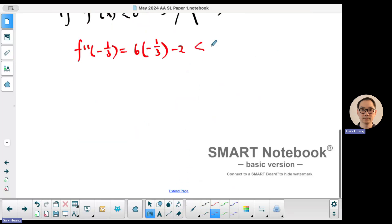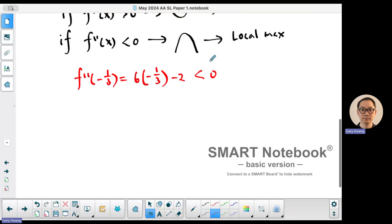So that's going to give you -2 - 2 which is -4. Negative 4 is less than 0. Less than 0, it's going to be concave down. Concave down meaning this must be a local maximum at x equals -1/3.